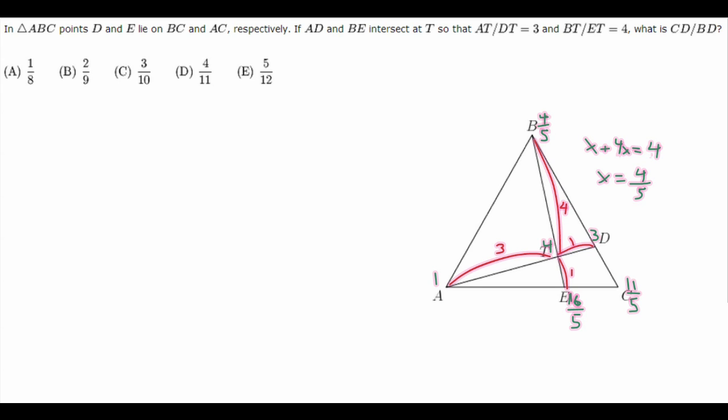Now we're almost done. We want to find the ratio CD to BD. So if CD times 11 over 5 equals BD times 4 over 5,